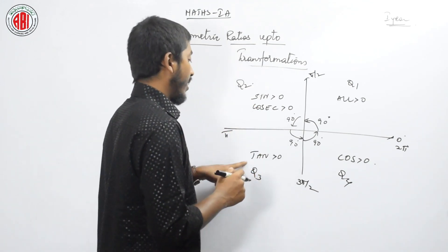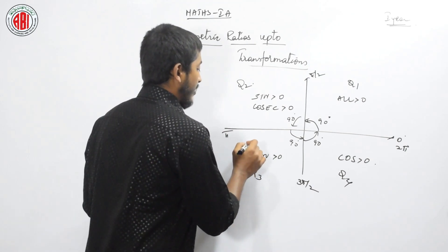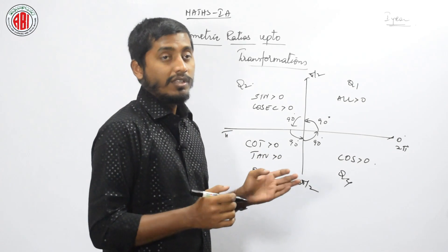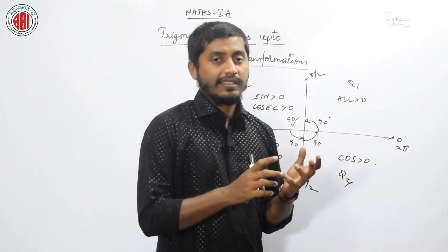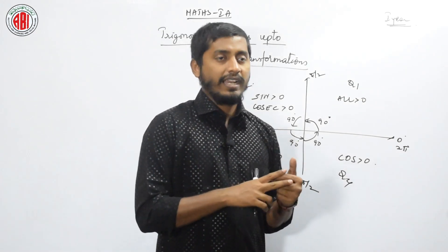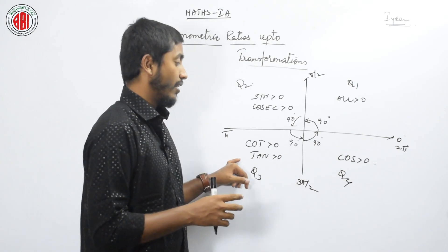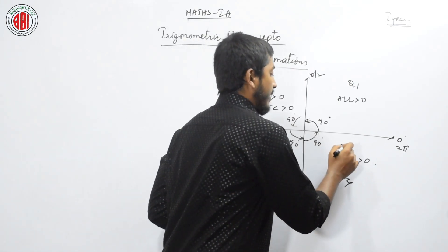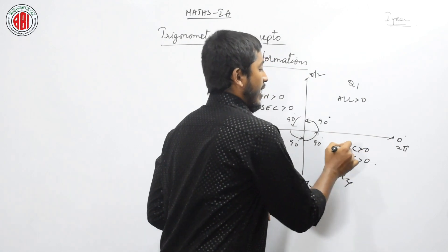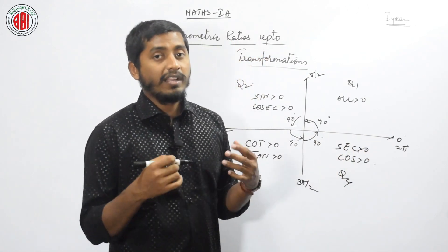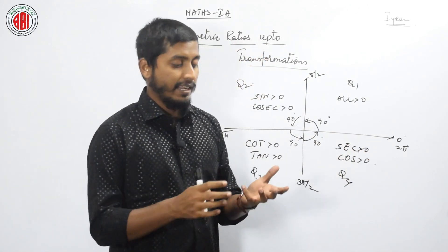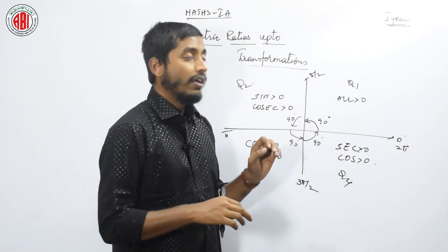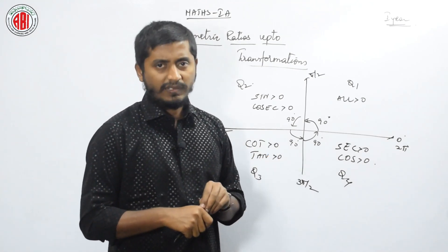In the third quadrant, tan and its reciprocal cot are always positive. The remaining ratios — sin, cos, cosecant, secant — are always negative in the third quadrant. In the fourth quadrant, cos and its reciprocal secant are positive; the remaining four ratios — sin, cosecant, tan, cot — are negative in the fourth quadrant.